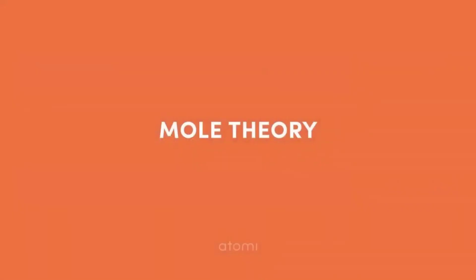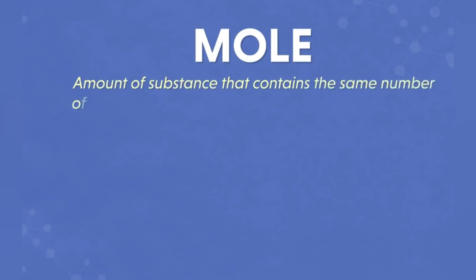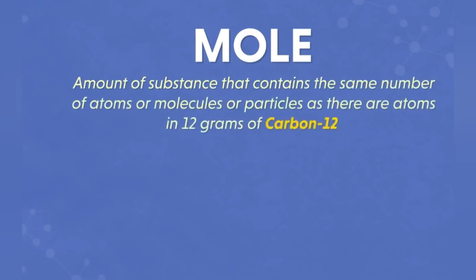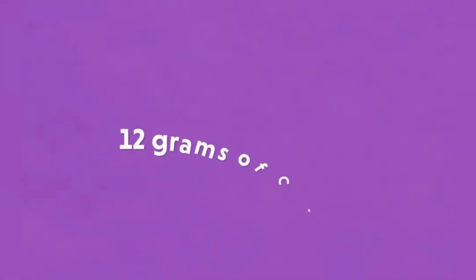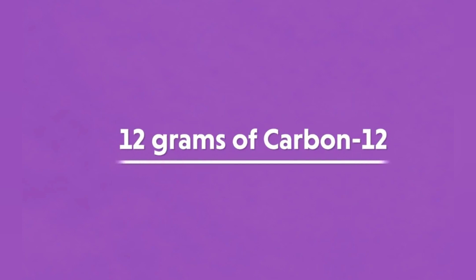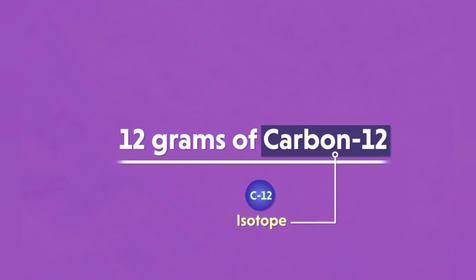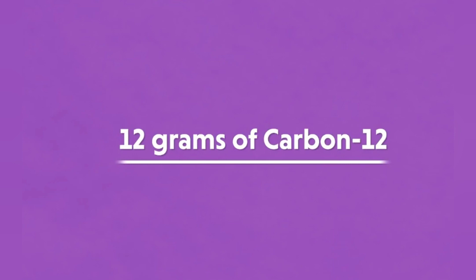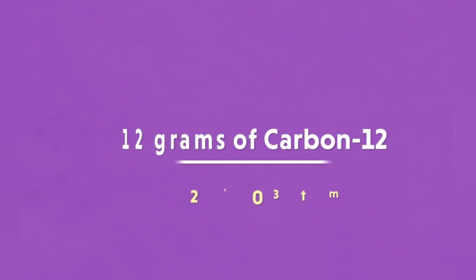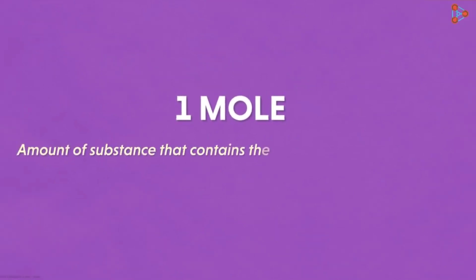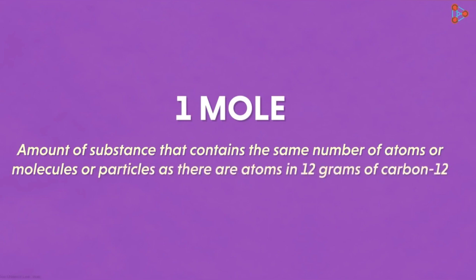The mole is a unit used by chemists to represent the amount of any substance that contains the same number of atoms, molecules, or particles as there are in 12 grams of carbon-12. When we say 12 grams of carbon-12, we mean the isotope carbon-12. Twelve grams of the isotope of carbon-12 gives us exactly Avogadro's number — 6.022 × 10²³ — because carbon-12, which has a very high percentage abundance of its isotope, is used as the world standard.